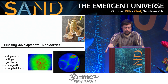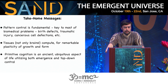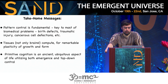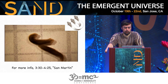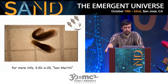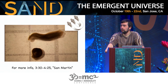The take-home message is that pattern control is fundamental. If you could control anatomy, you could solve birth defects, traumatic injury through regenerative medicine, cancer, and so on. Tissues — not just brains — compute for remarkable plasticity of growth and form. Primitive cognition is an ancient, ubiquitous aspect of life that takes advantage of both emergence and top-down control. I thank the various people who contributed to this work and the model species we work with — the tadpoles, planaria, and so on. Here are some two-headed planaria, which have been called impossible biological objects. For more information, join us at 3:30 downstairs. Thank you.